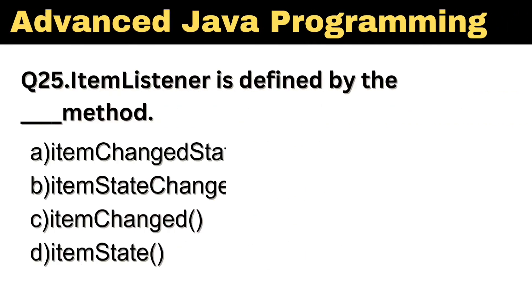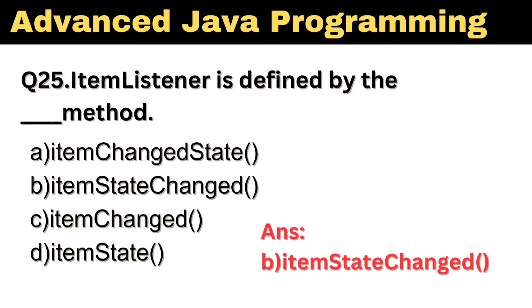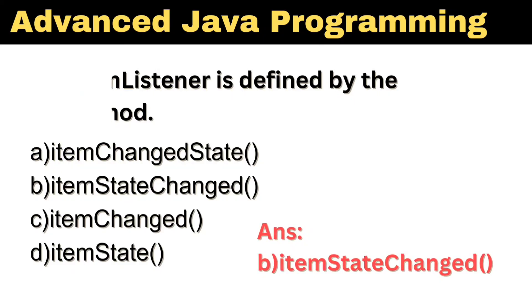Question number 25. Item Listener is defined by which method? The right answer is option B: Item State Changed.